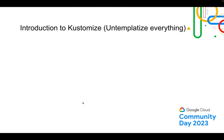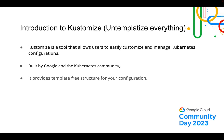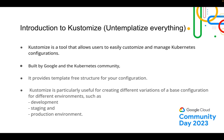Introduction to Kustomize: as the tagline says, 'untemplateize everything.' A template is a reusable piece of code you use multiple times across environments like stage, prod, QA, etc. Kustomize is a tool that allows users to easily customize and manage Kubernetes configuration. It was built by Google and the Kubernetes community, and it provides a template-free structure for your complete infrastructure. It's particularly useful for creating different variations of a base configuration for development, staging, and production environments.